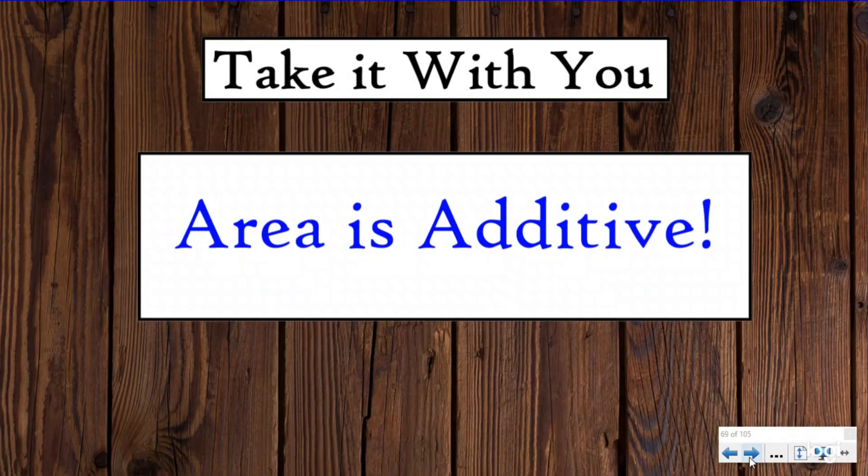So if you forget everything that you heard in this video except for one thing, we want this to be the thing you take with you: Area is additive. When you have an irregular figure, you can split it apart, find the areas of the different rectangles, and then add them back together to find your total area.